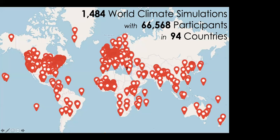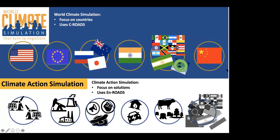Materials for this game are translated into several languages, so you can check out Climate Interactive's website for those translations. Some of you may be familiar with the En-ROADS model launched at COP25 in Madrid in December. I call these two simulations siblings — they're very similar but have a few key differences. In world climate, participants are divided by countries, such as the European Union or China, and it's founded on the C-ROADS model.